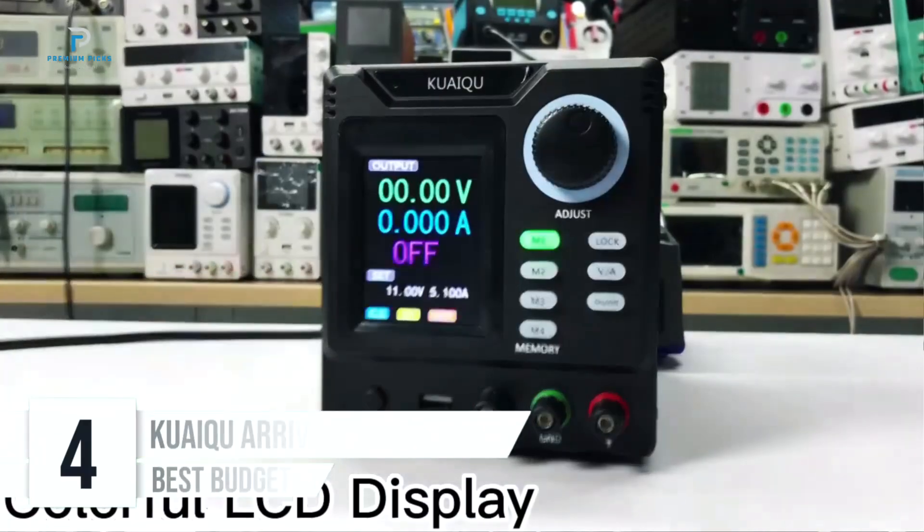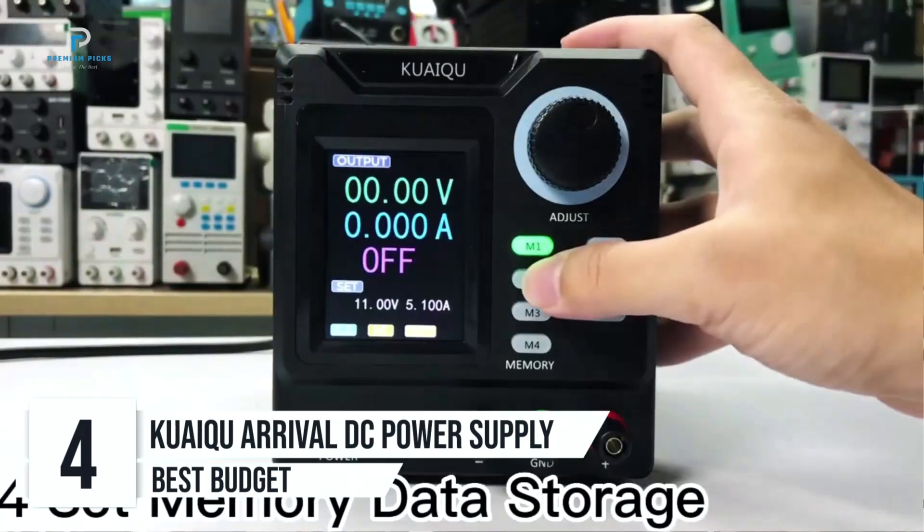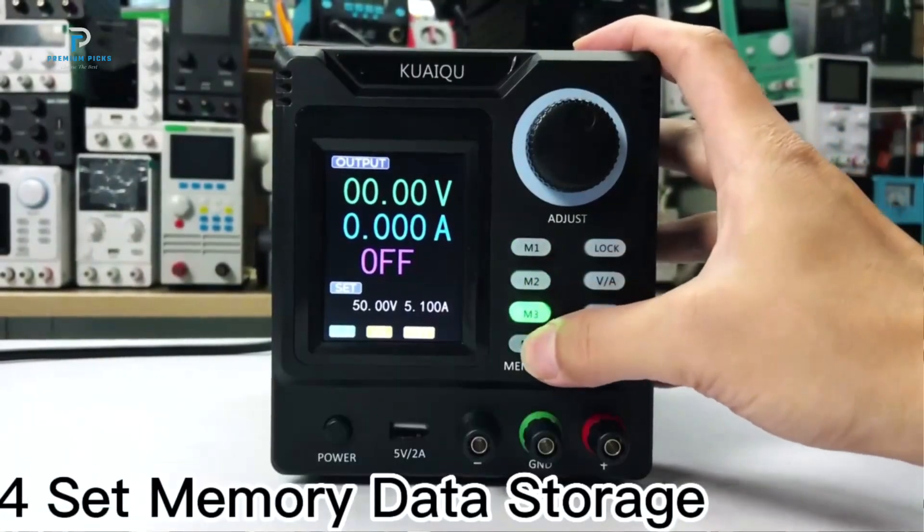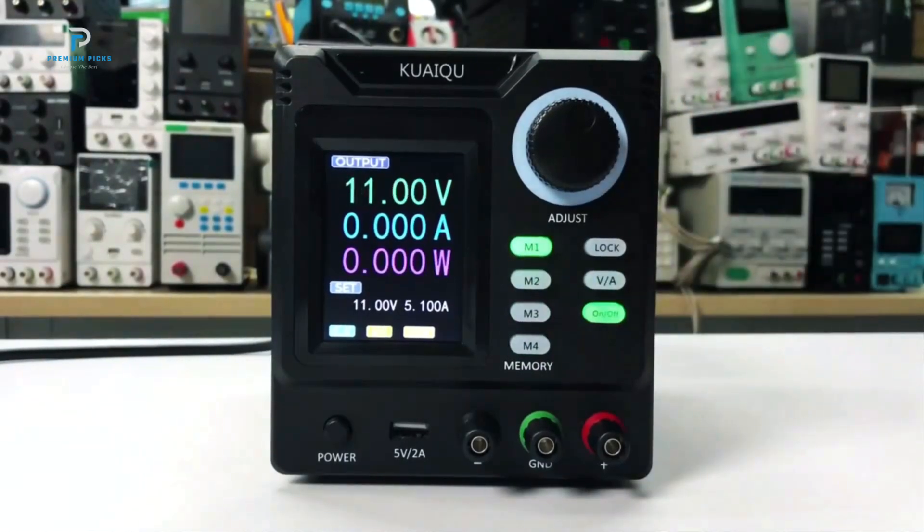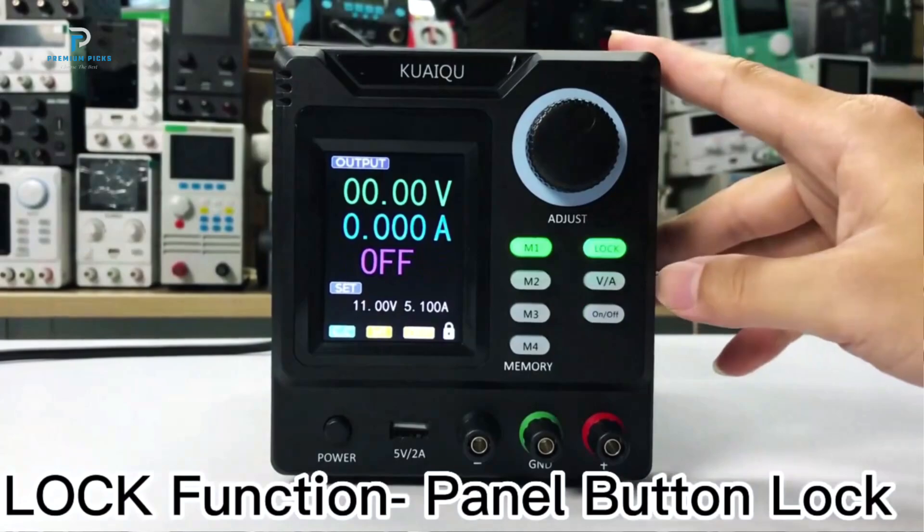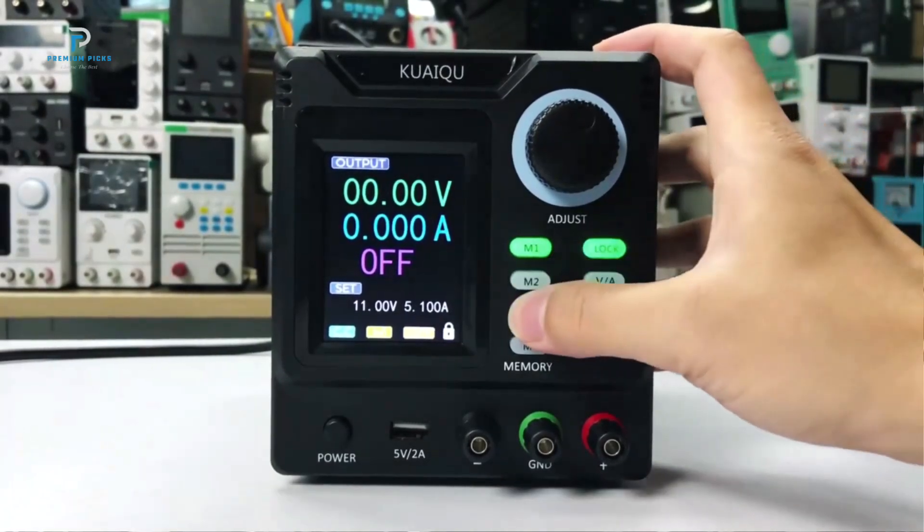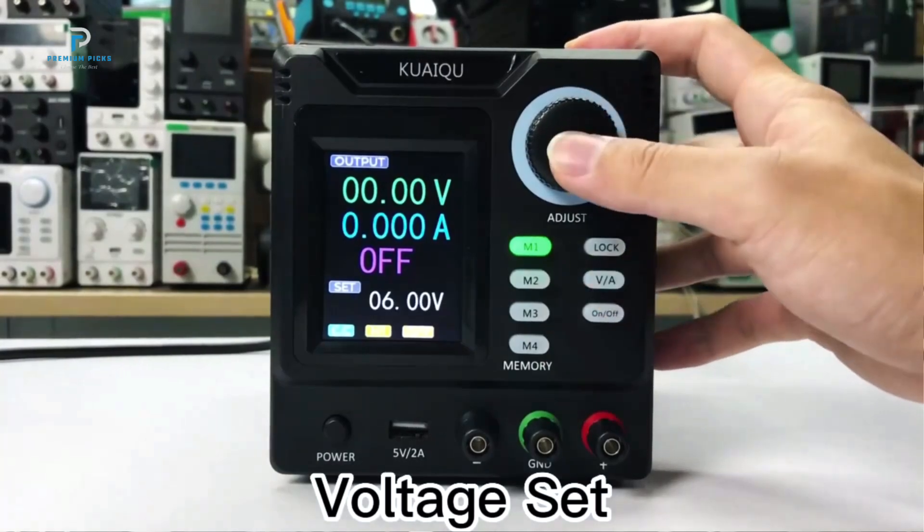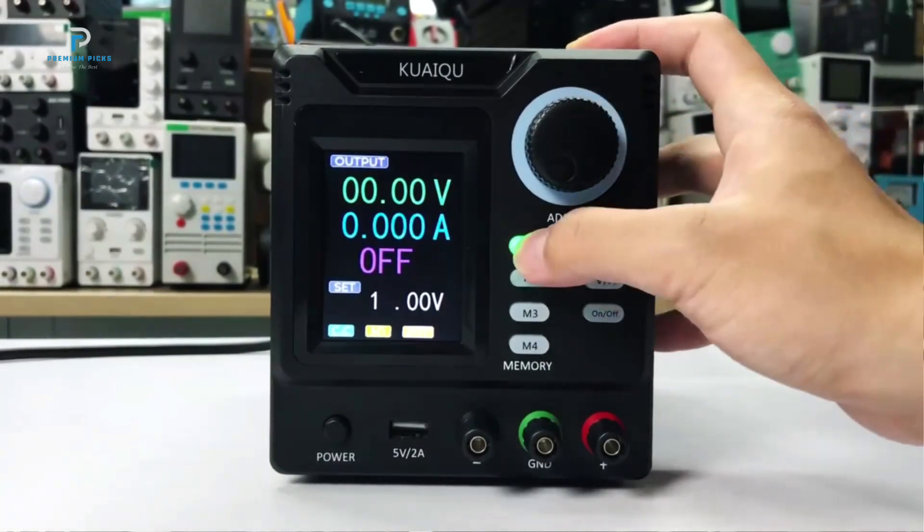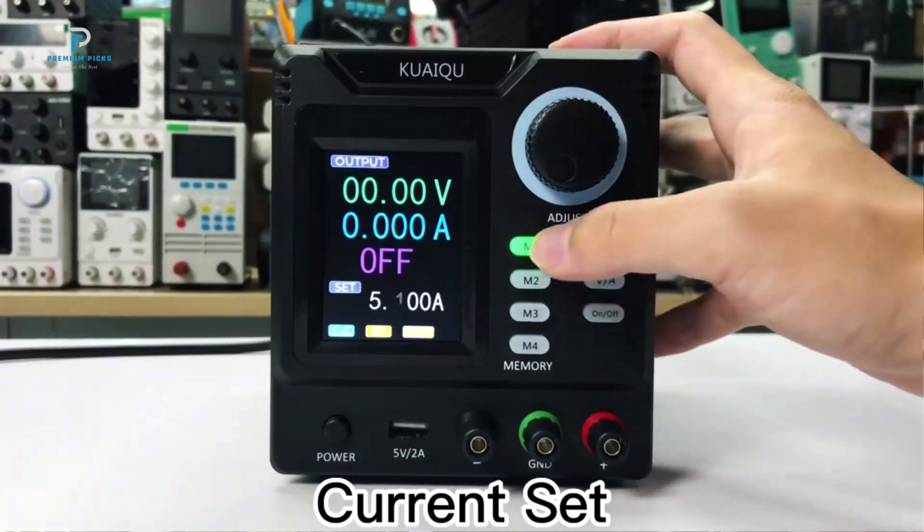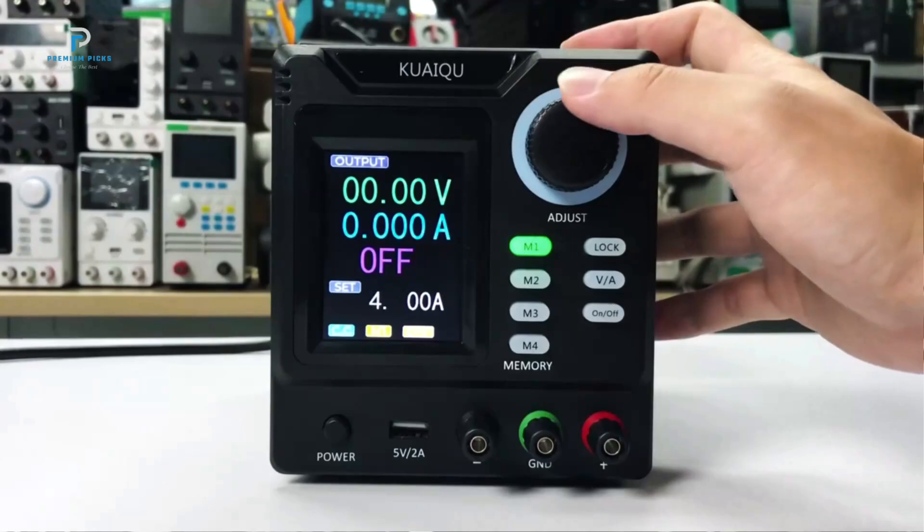Number 4. QUITESU Programmable Adjustable DC Power Supply. Meet the QUITESU Programmable Adjustable DC Power Supply, a cutting-edge tool designed for professionals and DIY enthusiasts who demand precision, reliability, and flexibility. Compact and powerful, this model not only meets the essential requirements for voltage and current control, but also offers a host of advanced features that make it an ideal choice for serious projects. The design of the QUITESU Power Supply is sleek and portable, making it perfect for those who need to move it around their workspace or take it on the go.